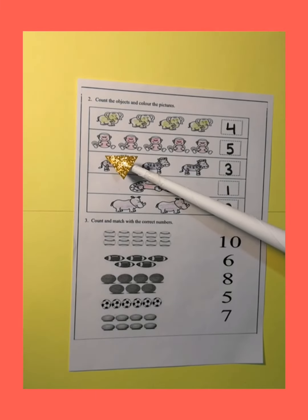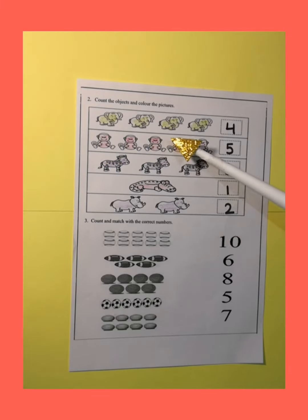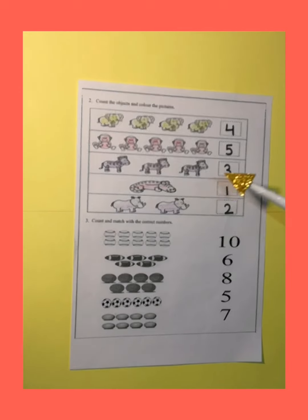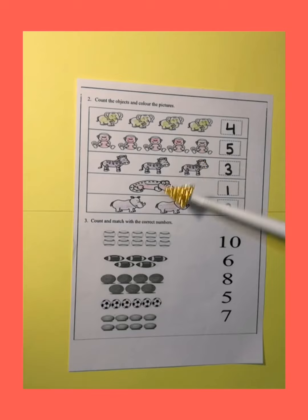Now, let's count the number of object in the second line. 1, 2, 3, 4, 5. There are 5 monkeys. So, write 5 in front of it. So, like this you have to attempt this question and color all the pictures.